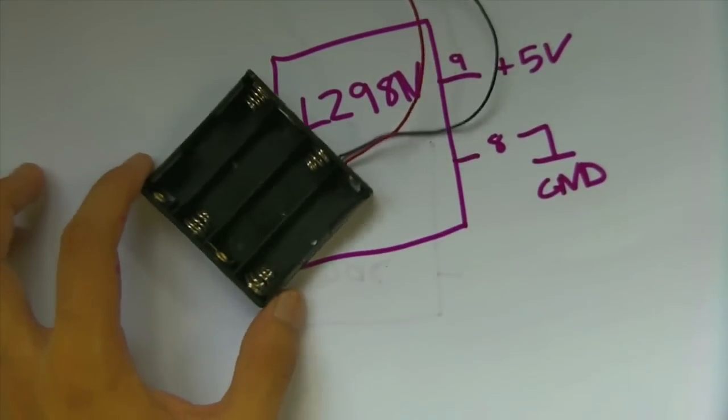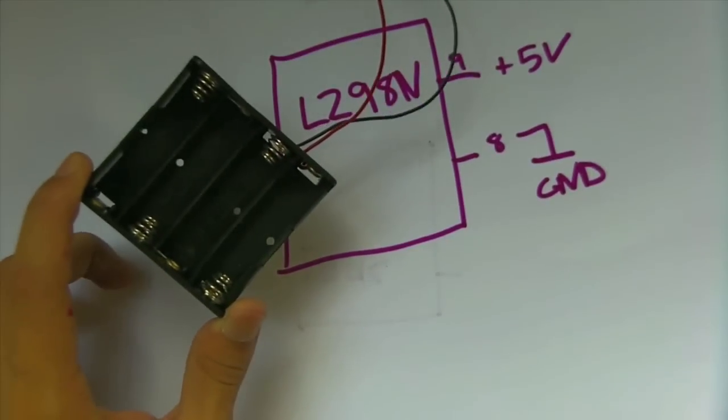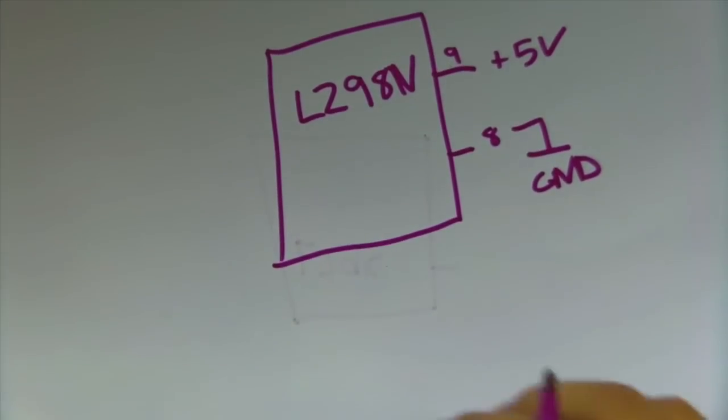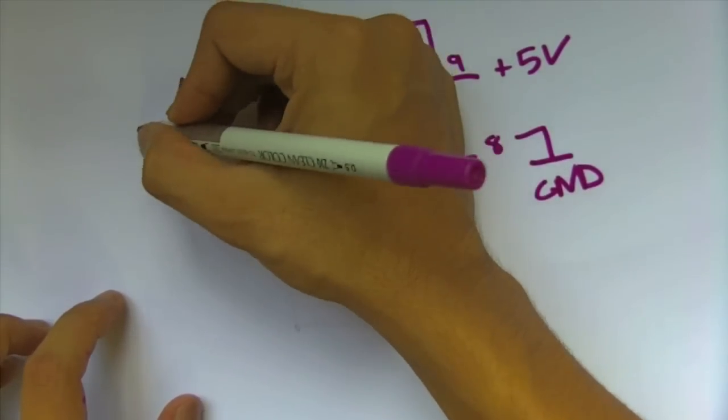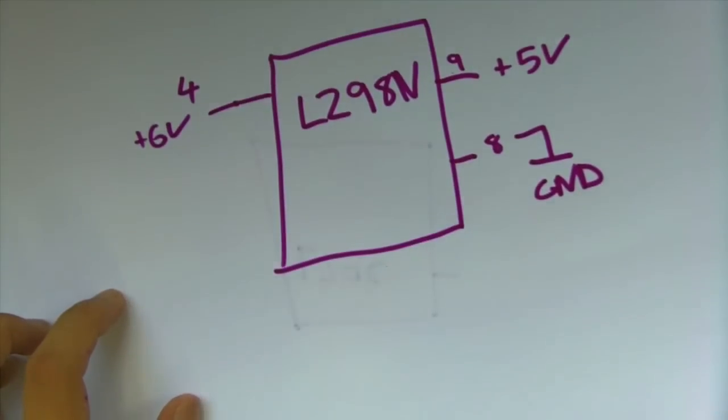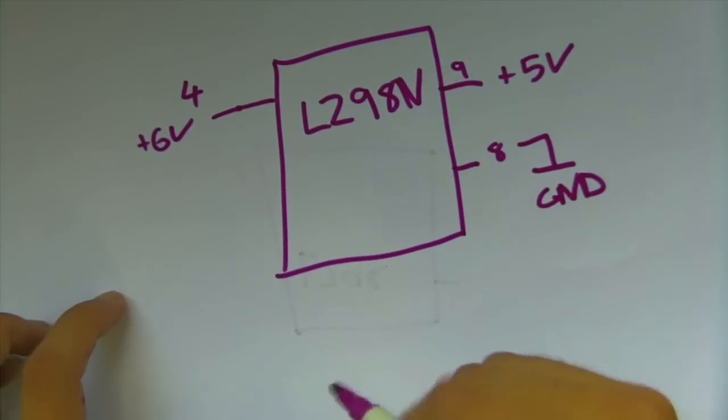So, use something like this, just a regular AA battery pack. That goes to pin 4, in this case that's 6 volts.